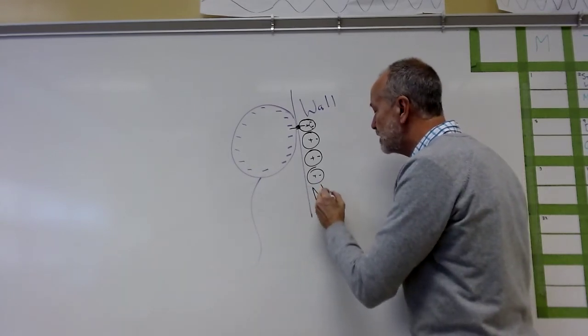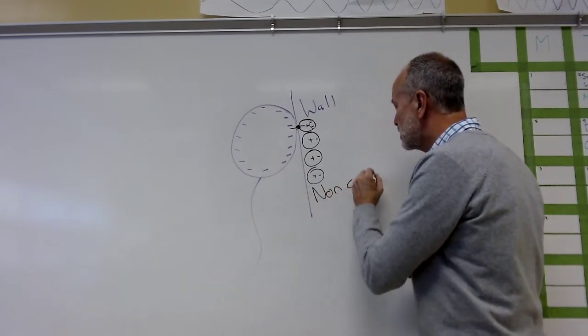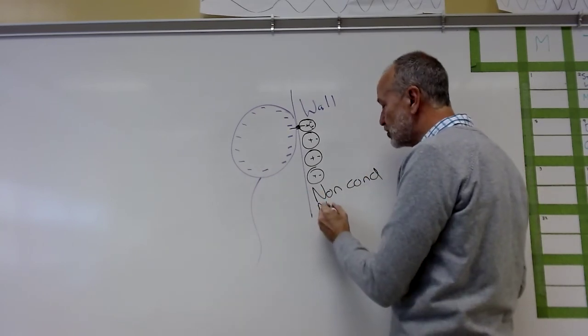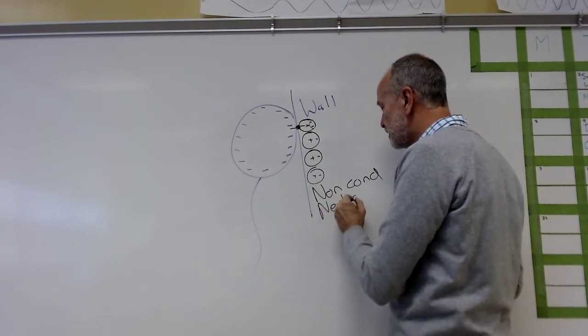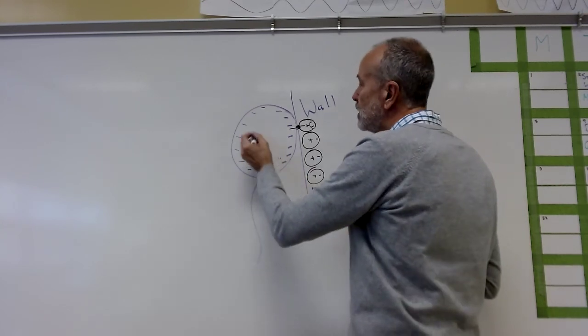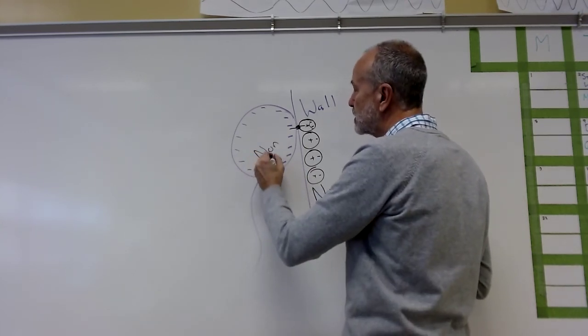That is still polarization and that is another example in this case of a non-conductor, neutral non-conductor being attracted to a negative non-conductor.